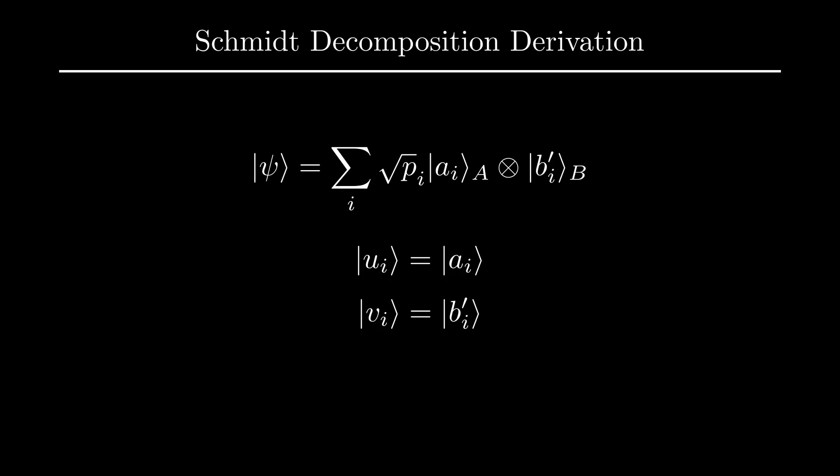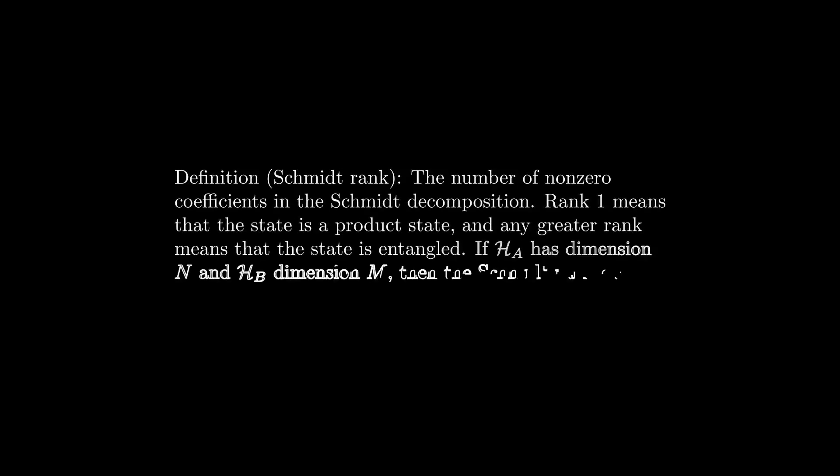Any bipartite pure state can be expanded in this fashion, though the choice of basis depends on the pure state, meaning that in general, two pure states cannot simultaneously be expanded in the same basis via Schmidt decomposition. Looking at this decomposition, we can see that it tells us whether a given state is entangled or not. In particular, we can look at the Schmidt rank, which is simply the number of non-zero Schmidt coefficients. If the Schmidt rank is one, then we have just a product state, meaning that A and B are not entangled. However, if the Schmidt rank is greater than one, then the state cannot be expressed as a product state, meaning that subsystems A and B must be entangled.